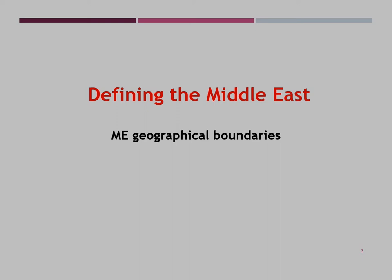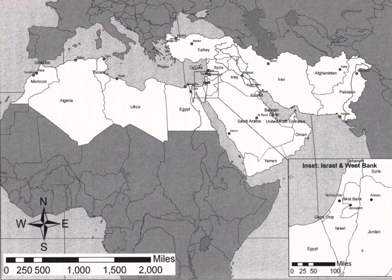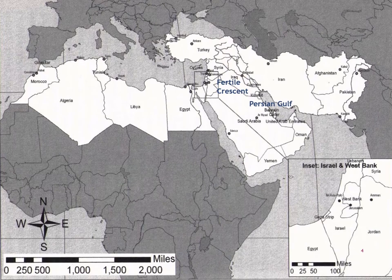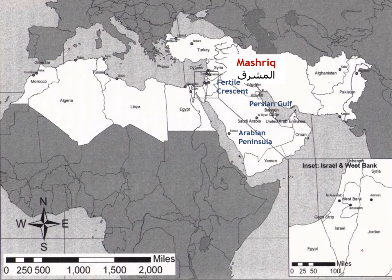Nevertheless, we will start by trying to define geographically what the Middle East is contemporarily. The Middle East is commonly delineated as comprising the region of the Fertile Crescent, the Persian Gulf, and the Arabian Peninsula. The Fertile Crescent is a sort of crescent or boomerang-shaped region, which was home to some of the earliest human civilizations. It spans across modern-day Iraq, Syria, Lebanon, Israel, Palestine, Jordan, and Egypt. It was also known as the cradle of civilization.